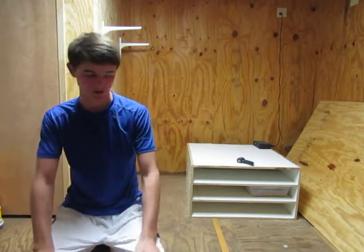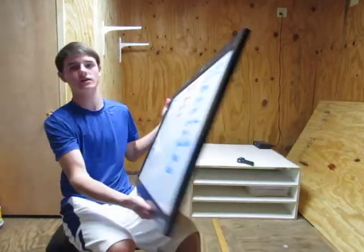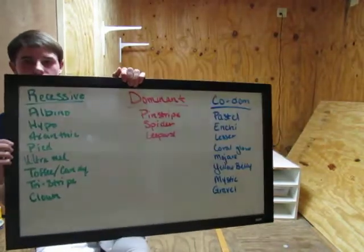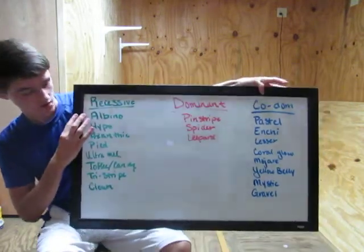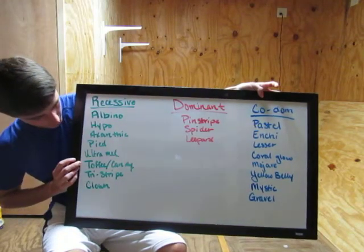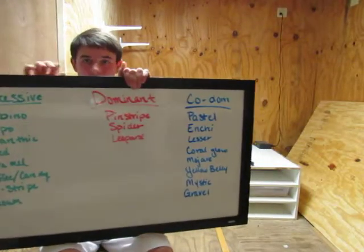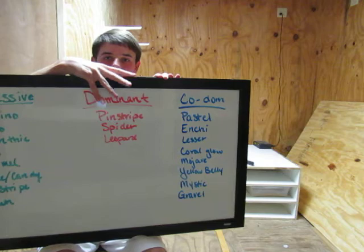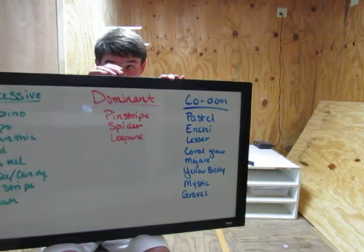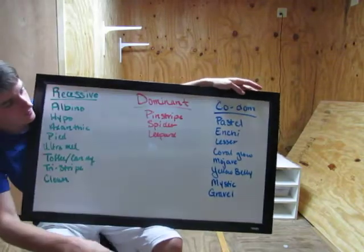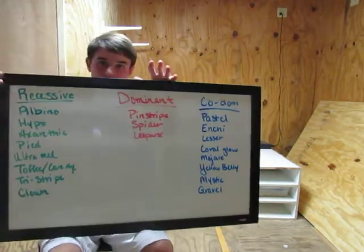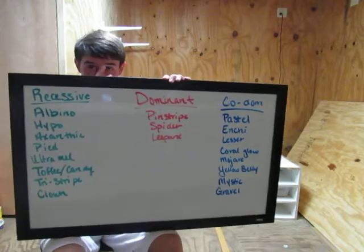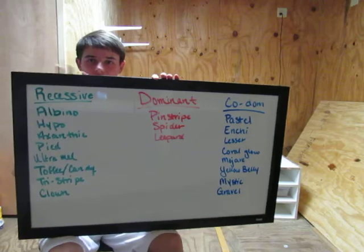Those are the three types of base morphs on the market. I'm going to go over a short list of examples. In the recessive column we have albino, hypo, axanthic, pie, ultramel, toffee, candy, tri-strike, and clown — just to name a few. In the dominant column we have pinstripe, spider, and leopard. And over in the codominant column we have pastel, enchi, lesser, goroglow, mojave, yellowbelly, mystic, and gravel — again, just a few, by no means a fraction of what's out there.